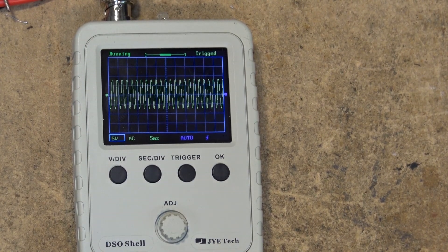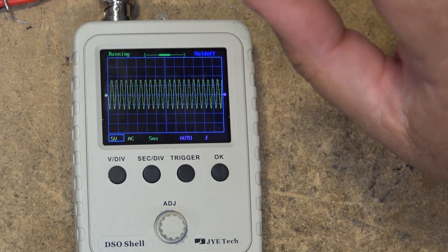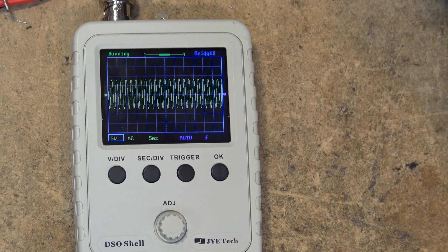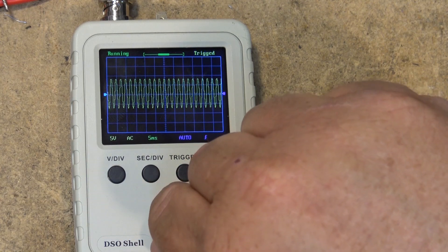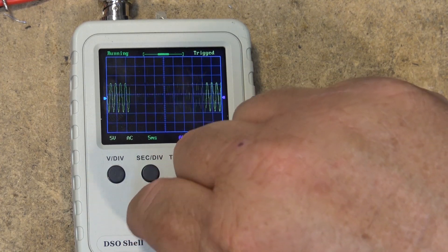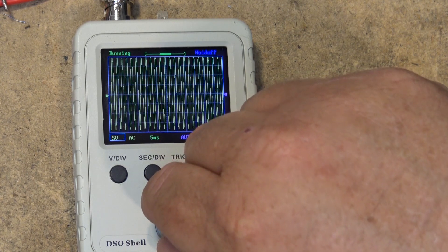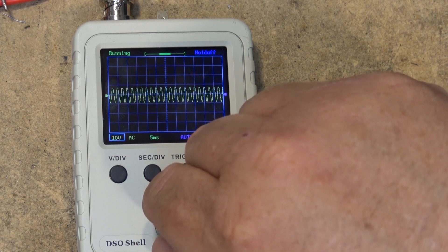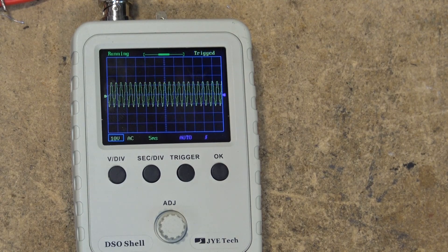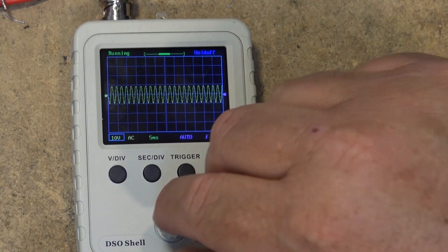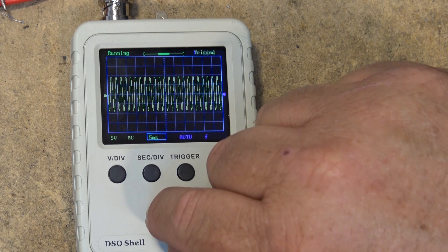We'll go through some features of the scope and look at some waveforms. Right now I'm looking at a standard audio waveform from my audio generator. If I press volt division I can adjust my display up and down, then change the gain. I'm on 10 volt scale now, sending approximately 20 volts from my generator. If I press sec division I can change my time base.